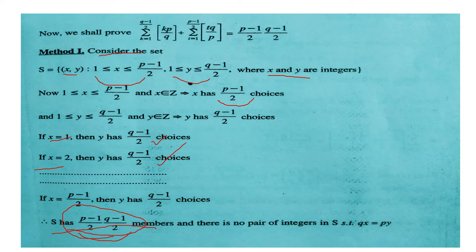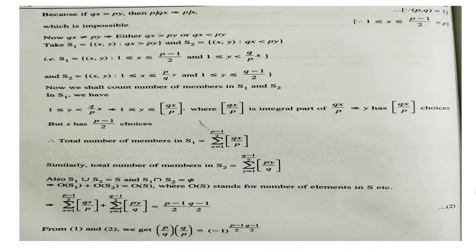In this set, no pair satisfies qx = py. To see why: if qx = py, then since gcd(p,q) = 1, p must divide x. But x is less than (p−1)/2, so p cannot divide x — a contradiction. Therefore qx is never equal to py.